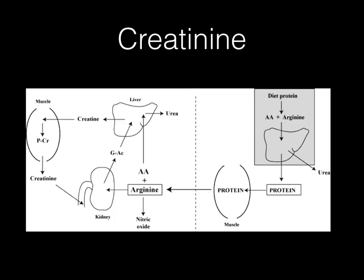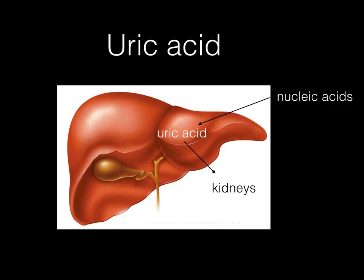You may have come across creatine. The waste product of creatine is creatinine. Creatine is made in the liver and used as creatine phosphate in muscles, where it acts as an energy store. Some of the creatine is converted to creatinine, which is excreted. Uric acid is also formed from nucleic acids and is excreted by the kidneys.